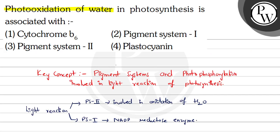Hence, our correct option is option number three — pigment system two. Hope you understood it well. Best of luck!